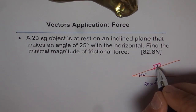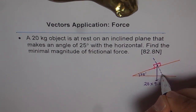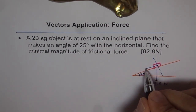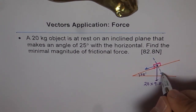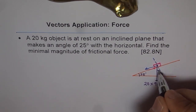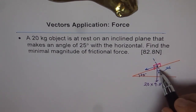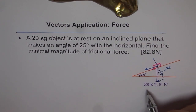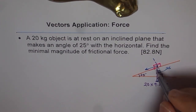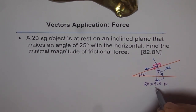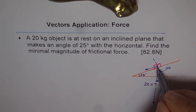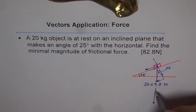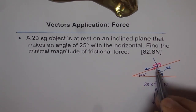To find that, we need to resolve this force into its two components: one which is trying to push the object down along the slope, and one which is pushing into the surface, normal to it. If this angle is 25 degrees, then this angle here is also 25 degrees. We can complete our vector diagram showing these two component forces, whose combination equals 20 times 9.8.